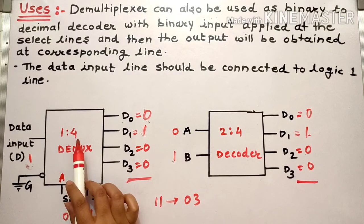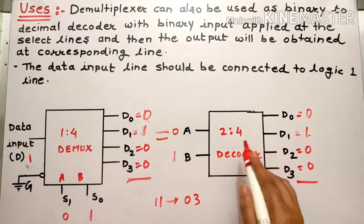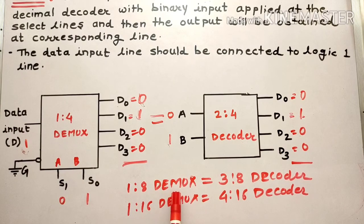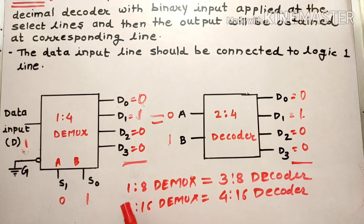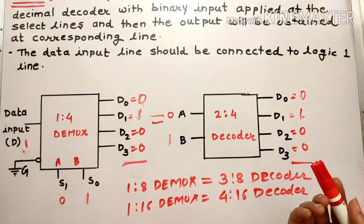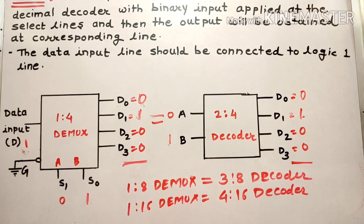The 1-to-4 demultiplexer is equivalent to a 2-to-4 decoder. In the case of a 1-to-8 demux, you can form a 3-to-8 decoder because a 1-to-8 demux has 3 select lines, which become the inputs of the decoder. For a 1-to-16 demux, you can form a 4-to-16 decoder because a 1-to-16 demux has 4 select lines, and those 4 select lines behave like inputs to the decoder.